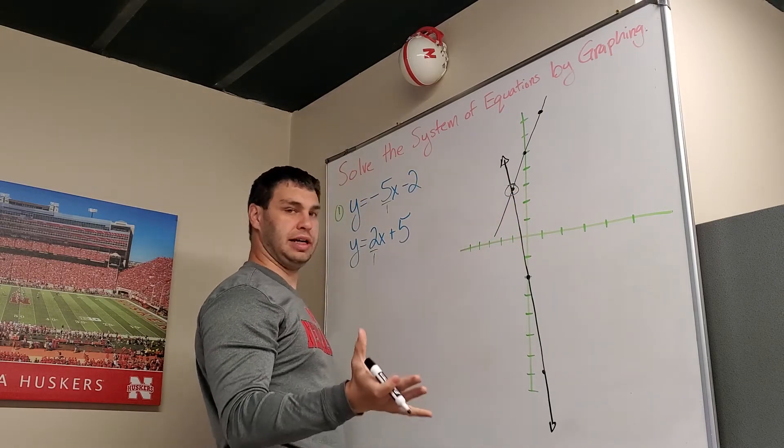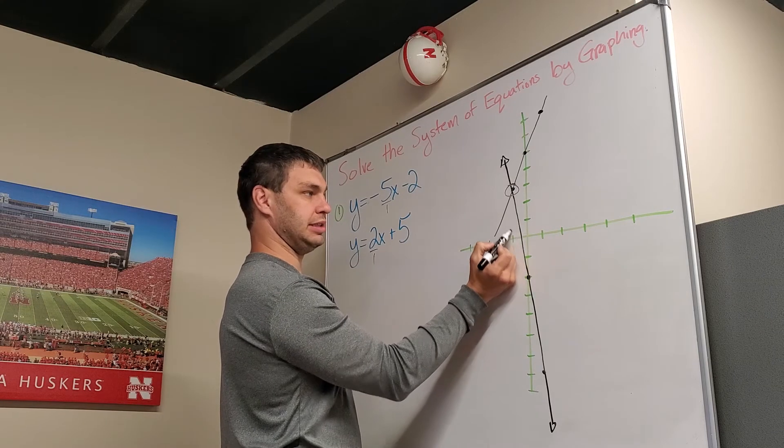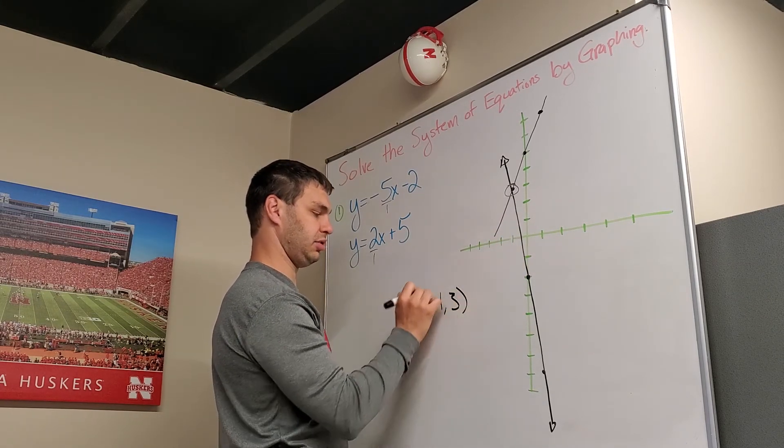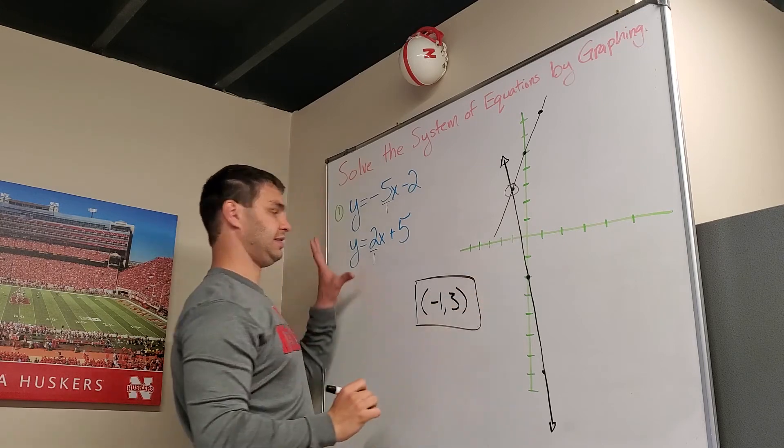Okay, so our answer, the way we write that, is going to be the point negative 1, 3. Negative 1, 3 is the solution to this system of equations.